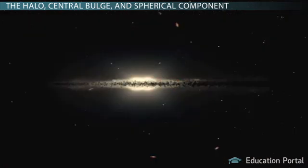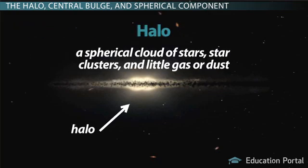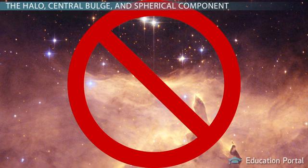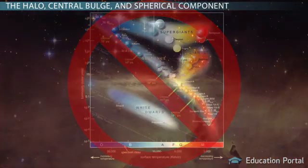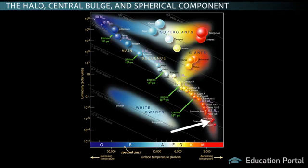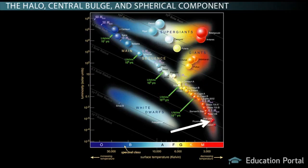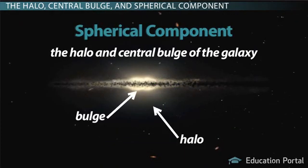Surrounding the central bulge and disk is something known as the galaxy's halo — a spherical cloud of stars, star clusters, and little gas or dust. Because there is little gas or dust, no new star formation occurs; no babies are being born. Therefore, the stars located in the halo are mainly old lower main sequence stars, red giants, and white dwarfs. This makes sense because red giants and white dwarfs are the last stages of life for many stars, and lower main sequence stars like red dwarfs are the ones that can live the longest. Together, the halo and central bulge of the galaxy are known as the spherical component.